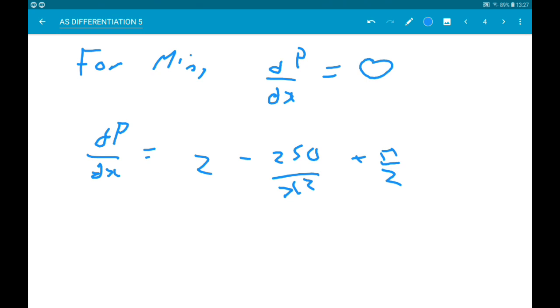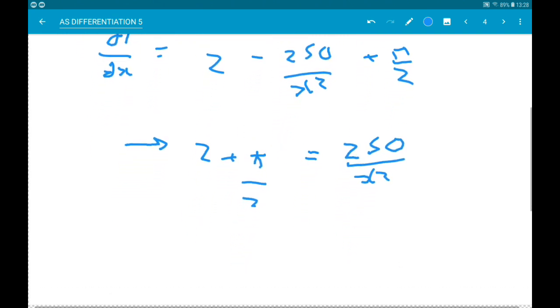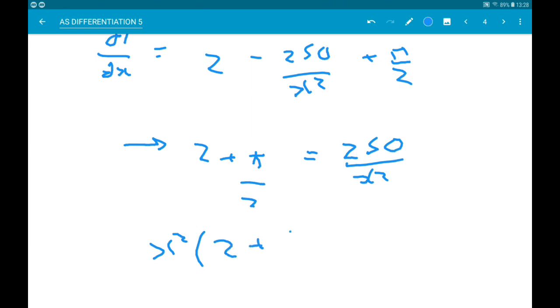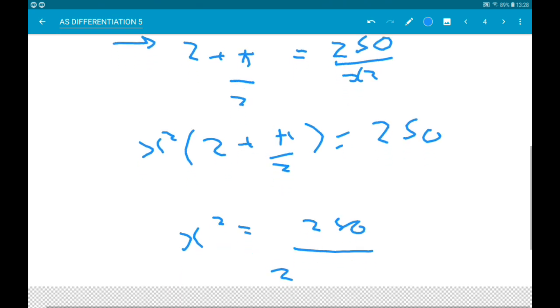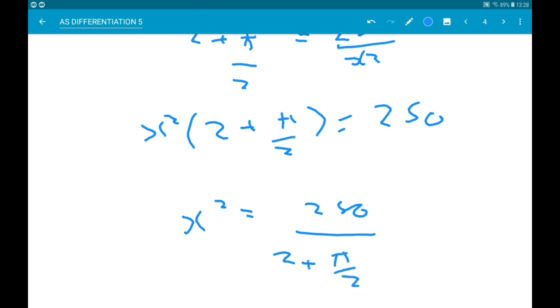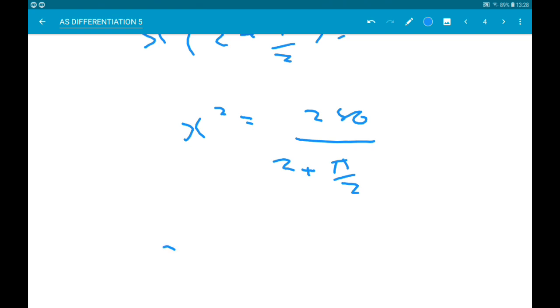Alright. From that, if we set it equal to 0, we get, or we can get, 2 add π over 2 is equal to 250 over x². Multiply through by x² and we get x² times 2 add π over 2 is equal to 250. Divide through by the bracket: x² is 250 over 2 add π over 2.